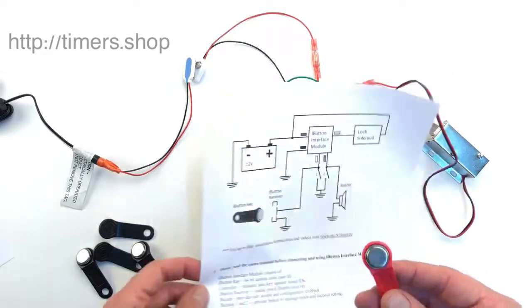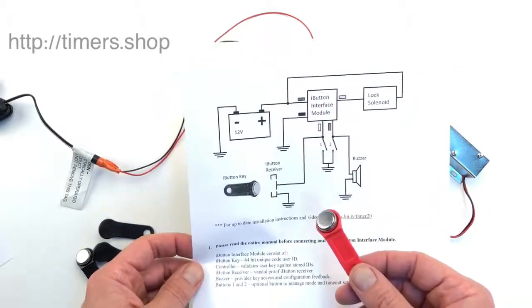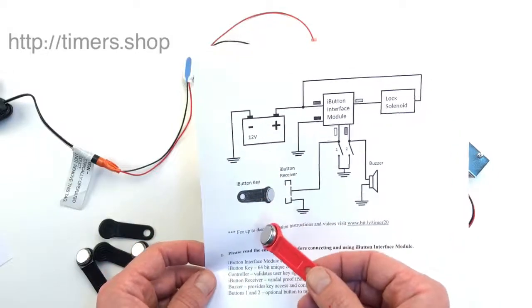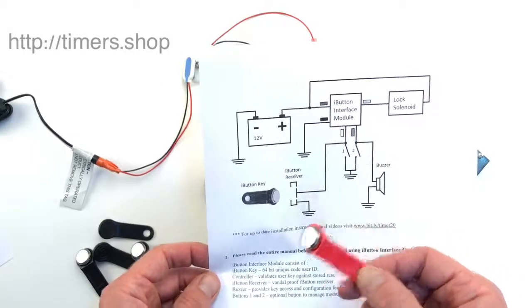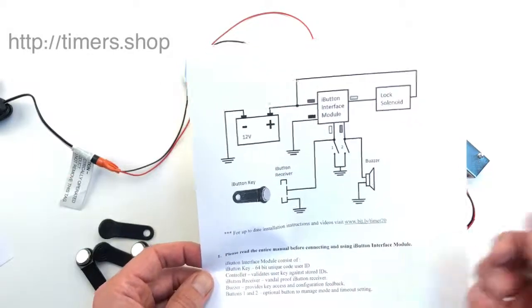We are going to program the master key first, and then the master key is going to be used to add multiple keys to the lock. The lock can keep track of 20 different keys, and you'll be able to add or remove keys.